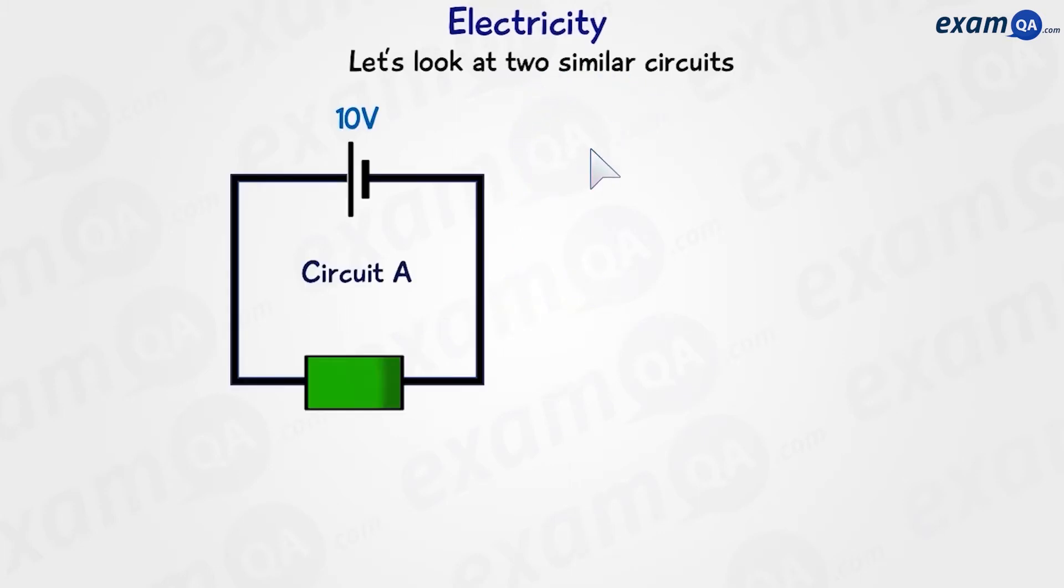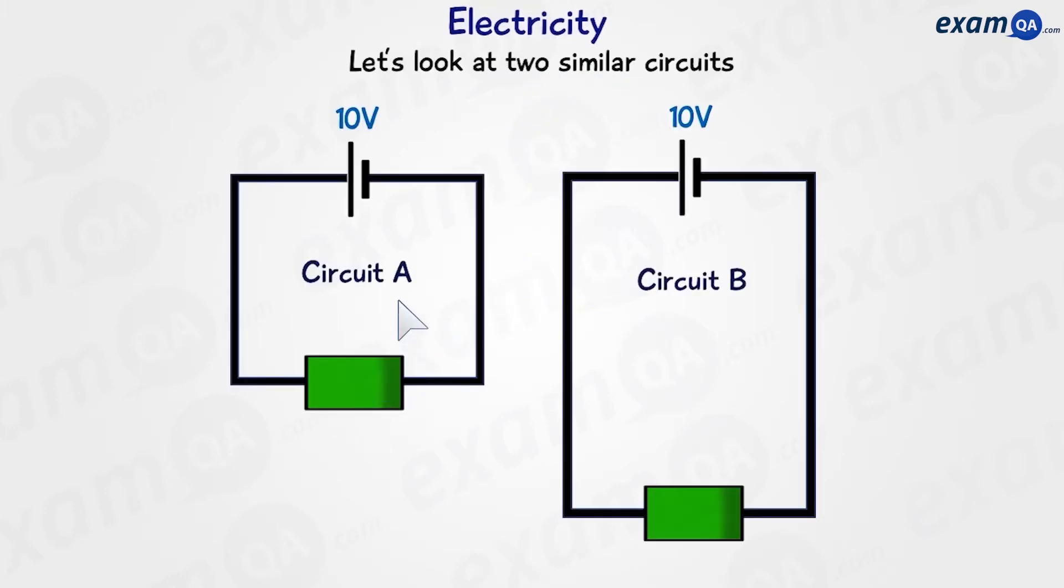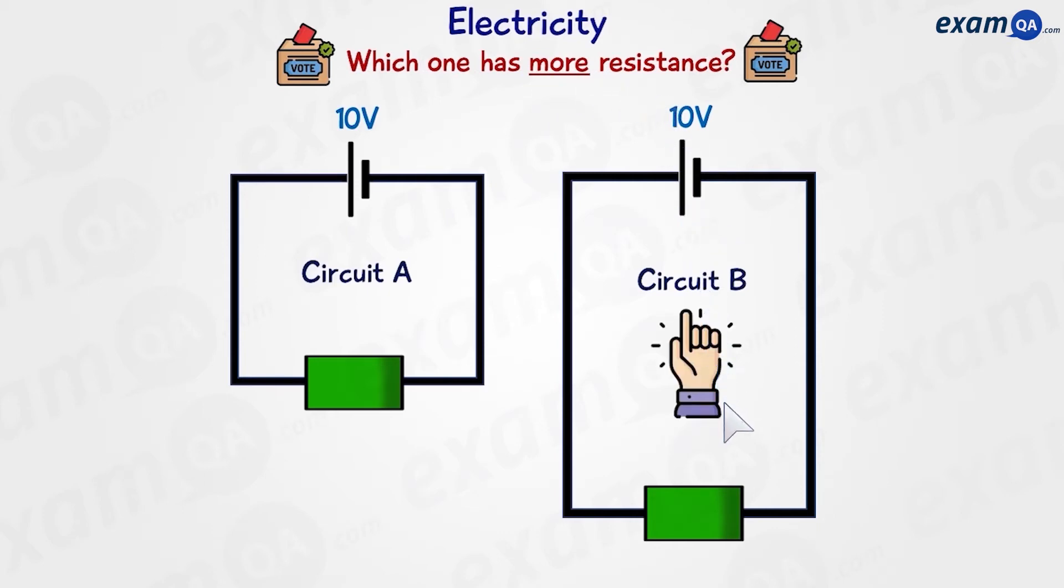So we have a circuit on the left called circuit A, and we have one on the right called circuit B. If we were to hypothesize, which circuit would have more resistance overall? The majority of people would say circuit B. But why?